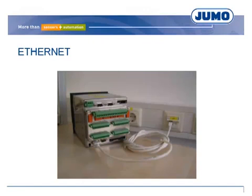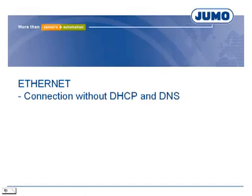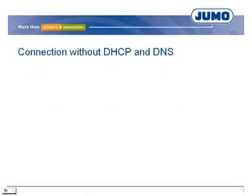UMO field devices are connected to Ethernet the same way as a computer. Network boxes and patch cables are used. In most cases, devices connected to Ethernet receive the network configuration from a DHCP server. The network configuration consists of IP address, subnet mask and gateway address.